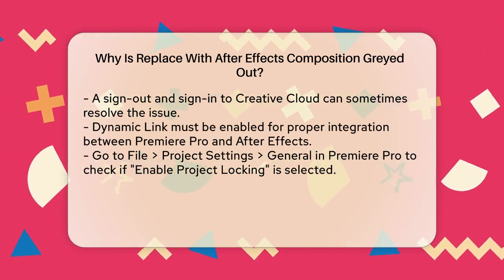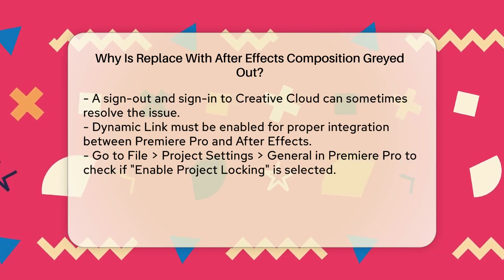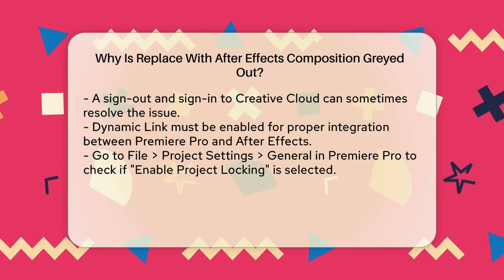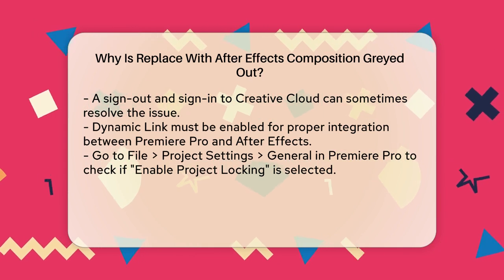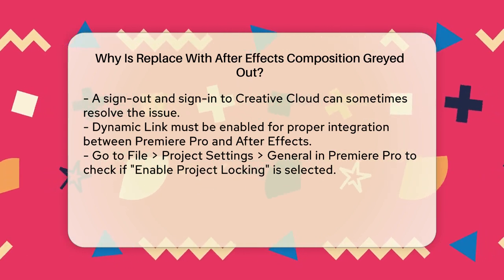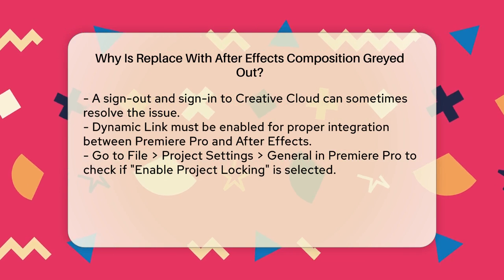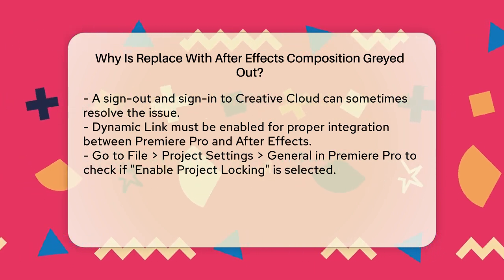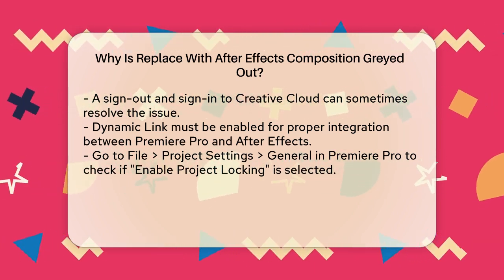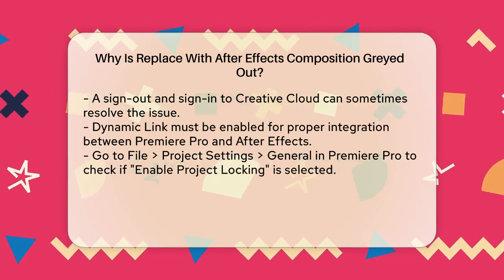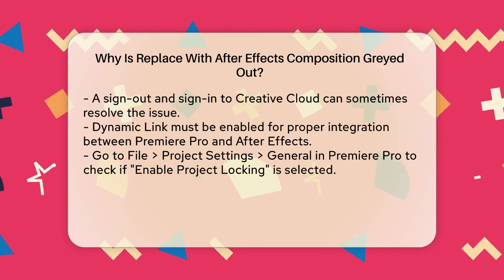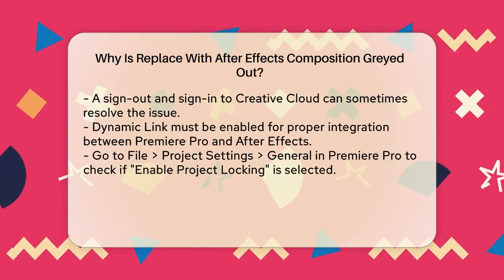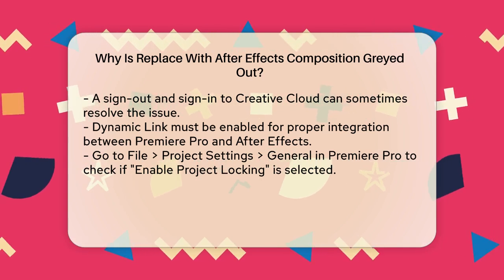Dynamic Link is a crucial feature that allows smooth integration between Premiere Pro and After Effects. If Dynamic Link is disabled or encountering errors, it can cause the Replace with After Effects Composition option to be grayed out. To fix this, launch Adobe Premiere Pro, go to File > Project Settings > General, and ensure that Enable Project Locking and Allow Projects to be opened by other applications is checked.